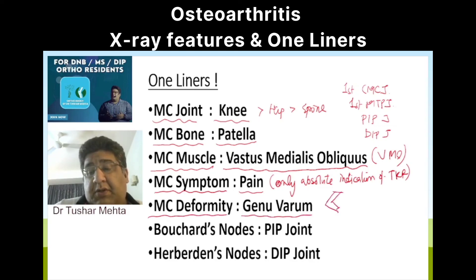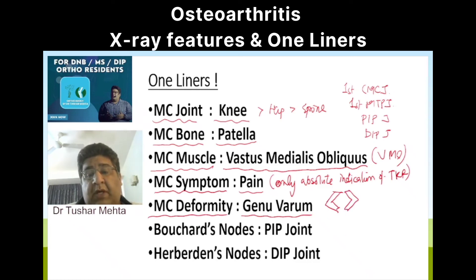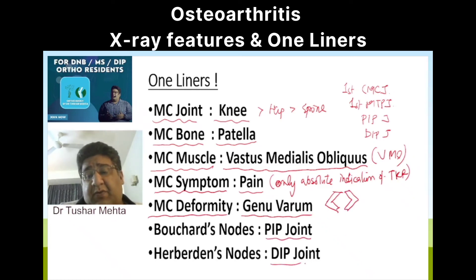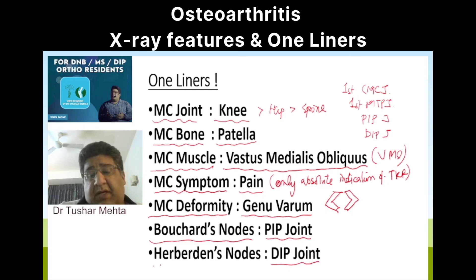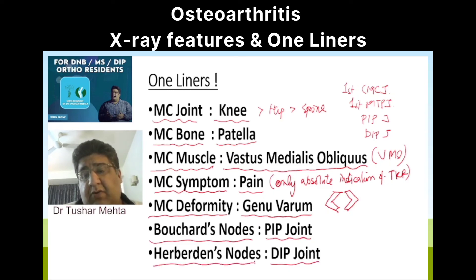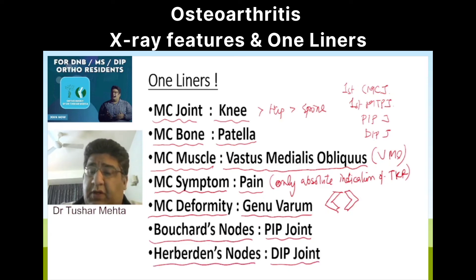The most common deformity seen is genu varum. There are other deformities as well seen in the PIP and DIP joints. In the PIP joint we see Bouchard's node, and in the DIP joint we see Heberden's node.